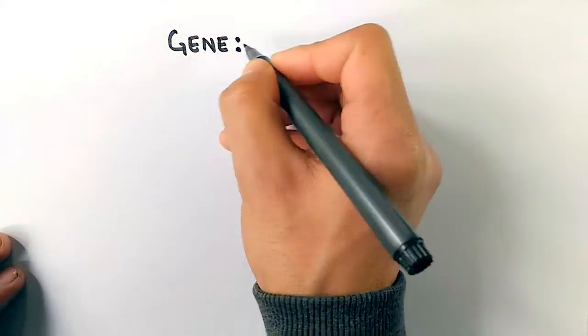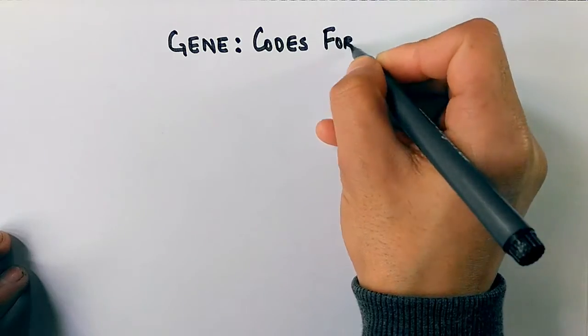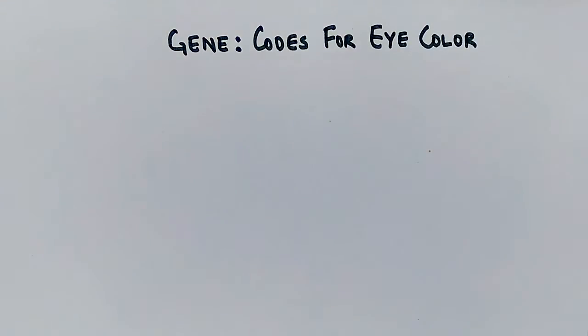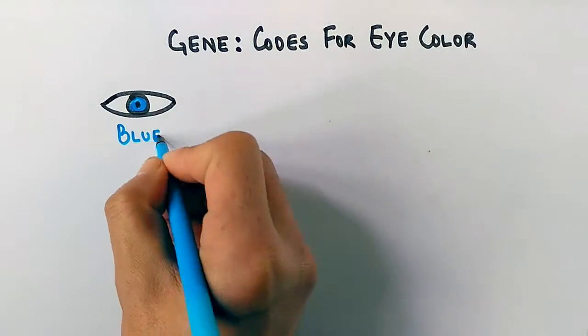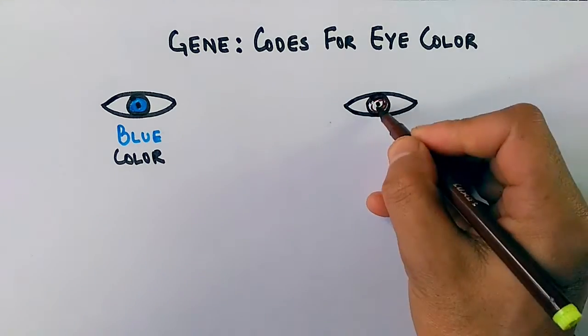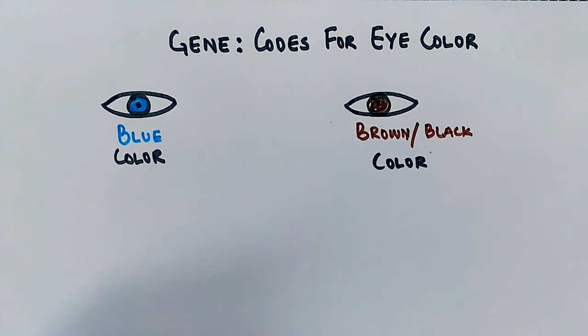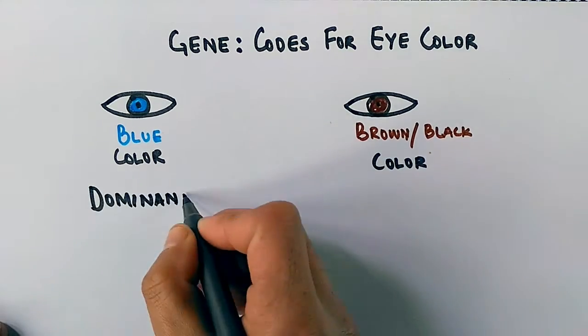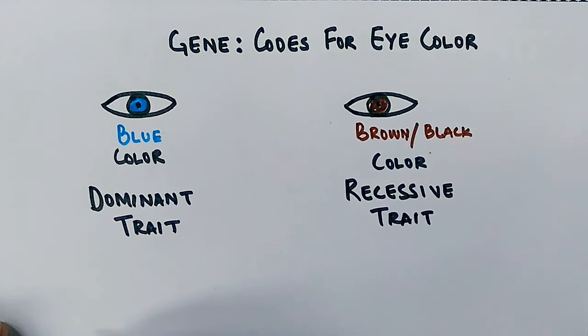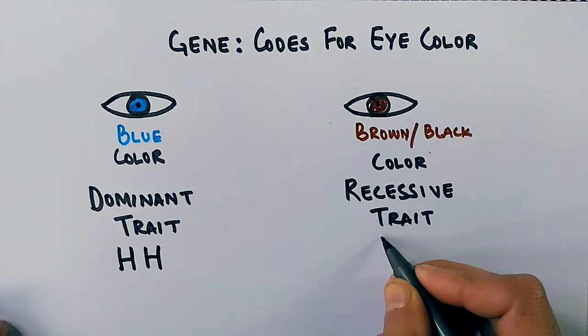In that population we have a gene that codes for an eye color. In the population, the dominant eye color is blue and the recessive eye color or recessive trait in the eye color is brown or black, let's assume that. So in dominant trait we have a gene that contains H allele, both the alleles are in dominant form, it uses a blue color.